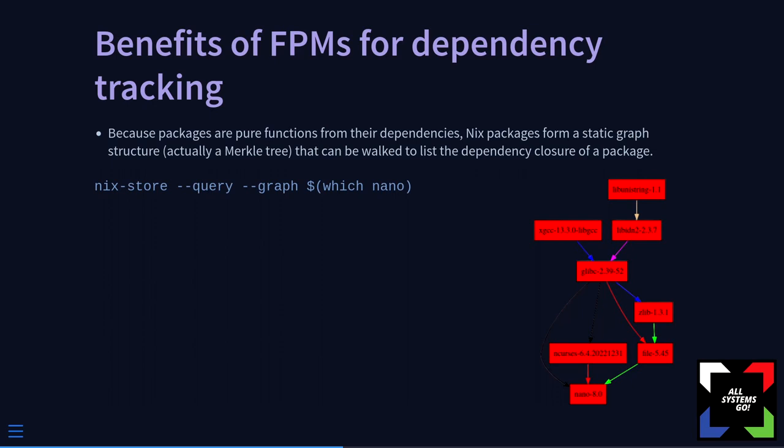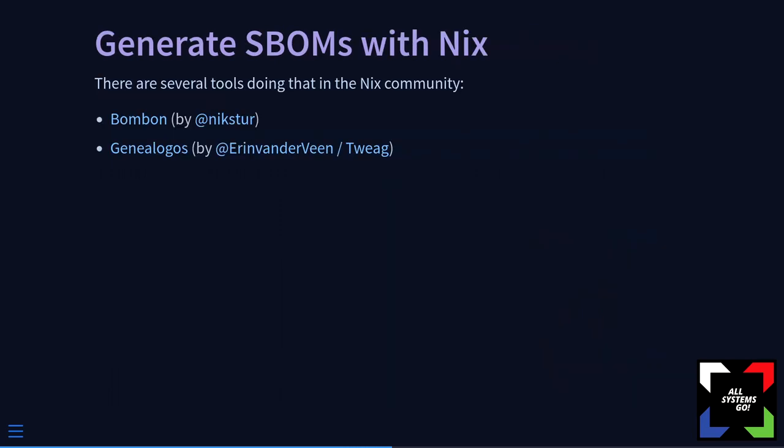In the Nix ecosystem, there are several projects that take a Nix package expression and output a CycloneDX document — one of the standards for Software Bill of Materials. There is one called BombBomb, done by Niklas who talked before, and another one called Genealogos.